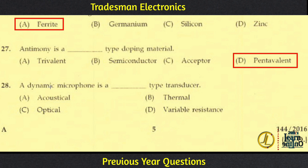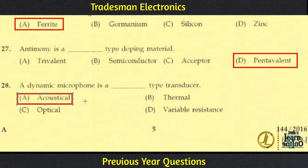A dynamic microphone is a type of transducer. A transducer converts sound energy into electric energy. This is an acoustical type of transducer. Option A is the answer.